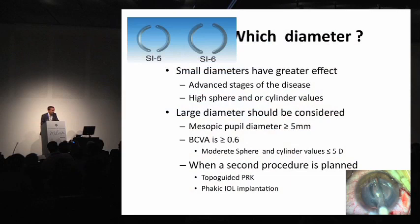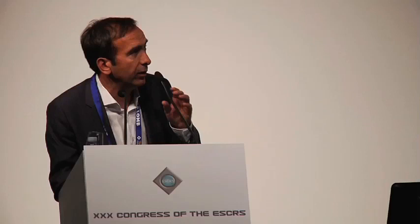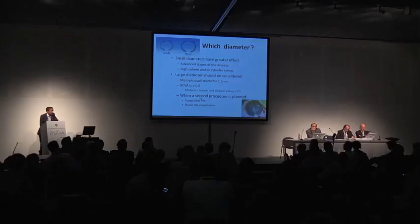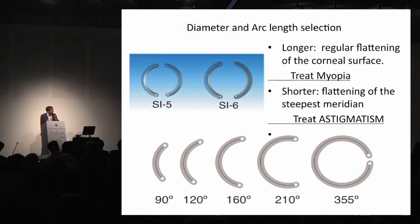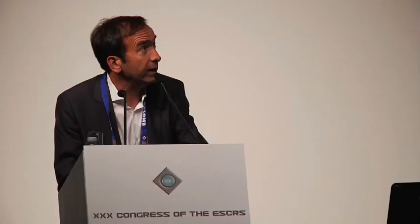How to choose the diameter? Generally, small diameters have a greater effect and they are better for advanced stages of the disease, especially when you have high amounts of sphere. Larger diameter should be considered when the mesopic pupil is large or when best corrected visual acuity is more than 0.6, and also when a second procedure is planned — of course ICL, but also PRK, which is frequently done after ring implantation in our experience.